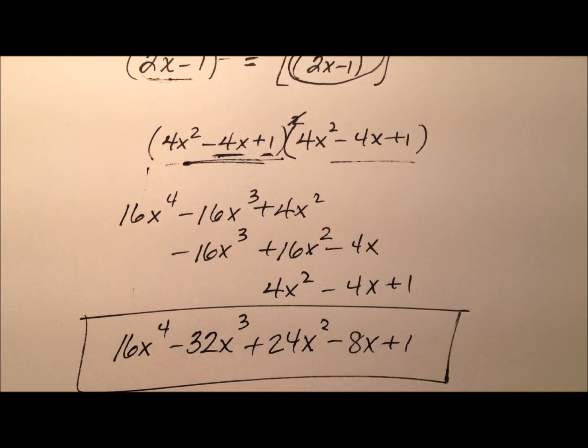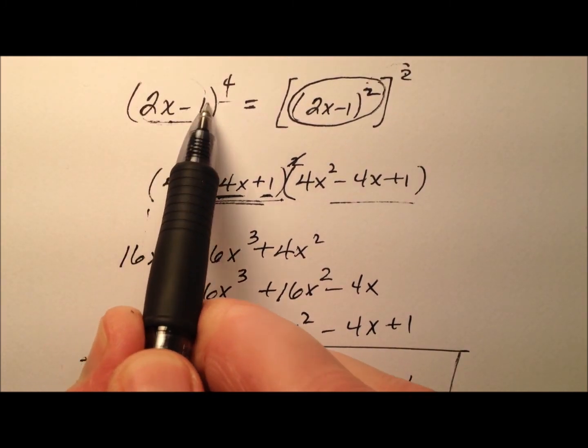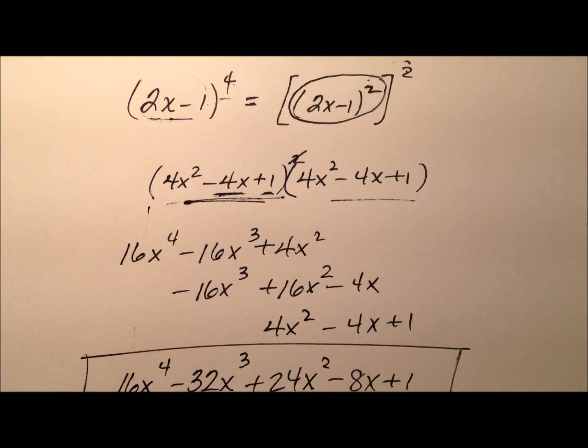So there we are. This quartic polynomial in five terms is going to be the product whenever I take this binomial 2x minus 1 and raise it to the power of 4.